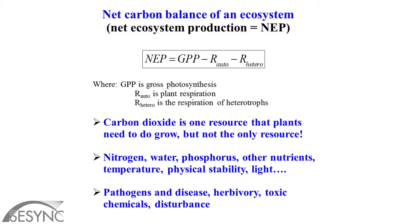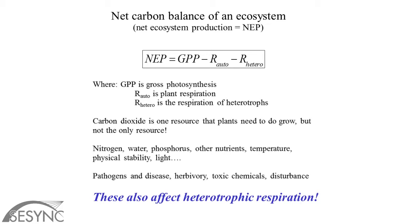Pathogens and disease, herbivory, toxic chemicals, and disturbance are also important and will affect the response to elevated CO2. And we haven't even started to talk about heterotrophic activity. This equation is trying to predict net ecosystem production — the total amount of carbon stored by the ecosystem, not just carbon stored by plants. Studies are only beginning to look at the effects of elevated CO2 on other components of this equation, particularly heterotrophic respiration. There was a really intriguing title at the ESA meetings: 'Significant effects of elevated CO2 on heterotrophic processes and microbial community composition.'